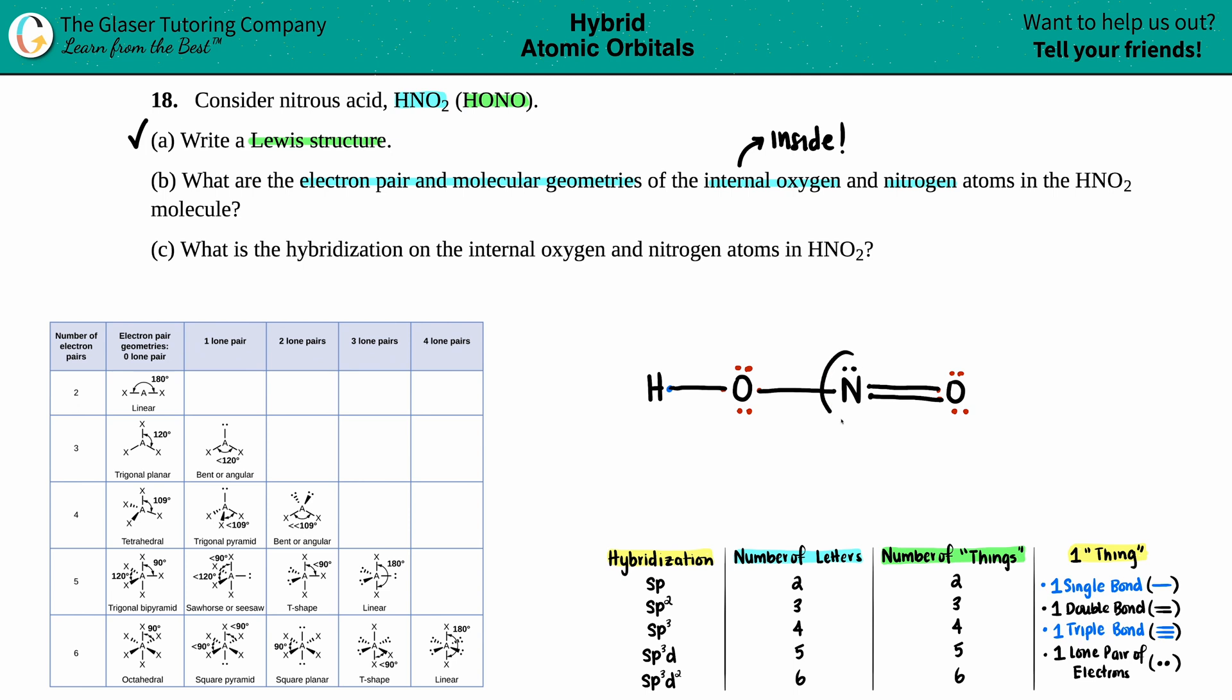Internal just means the oxygen that's inside and the nitrogen. So there's only one nitrogen. So we're obviously going to be focusing on the nitrogen and the internal oxygen. I have two oxygens here. Can you guess which one is internal? This one. This one. It's inside the chain, right?